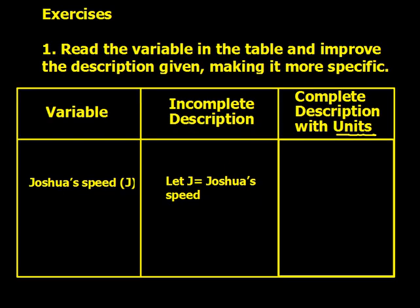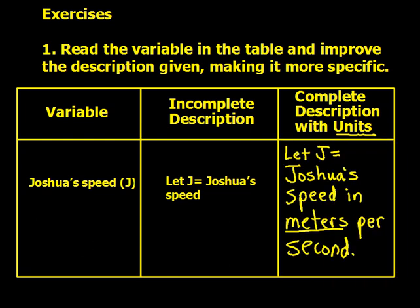As we move through these exercises today, our focus is just being descriptive on our variables. This opening exercise tells us to read the variable in the table and improve the description given by making it more specific. On this first one, we have Joshua's speed is J. Instead of just 'let J equal Joshua's speed,' we write: let J equal Joshua's speed in meters per second.